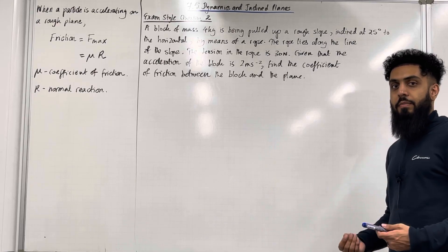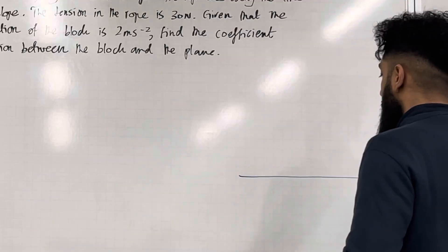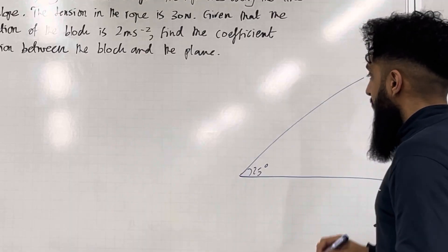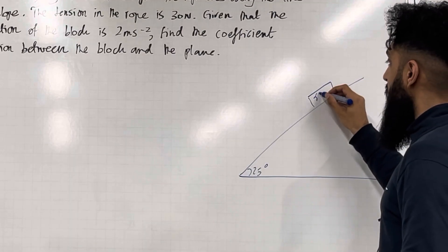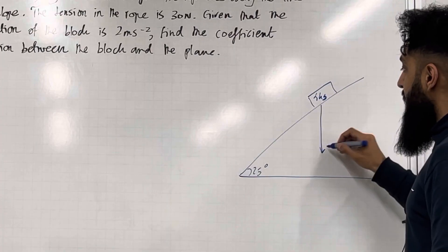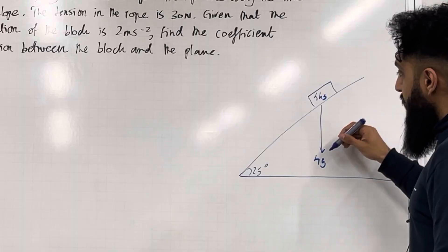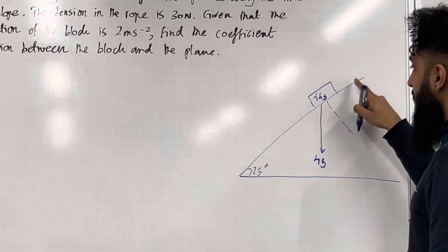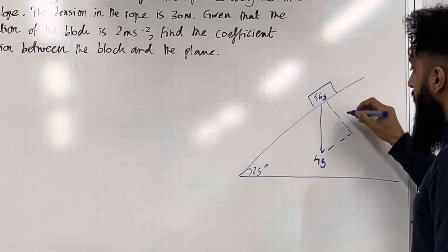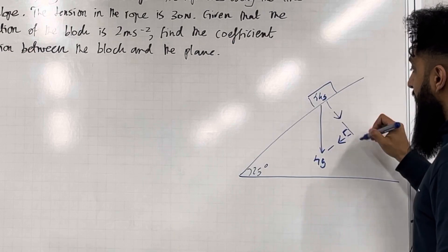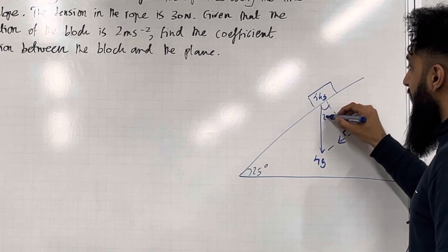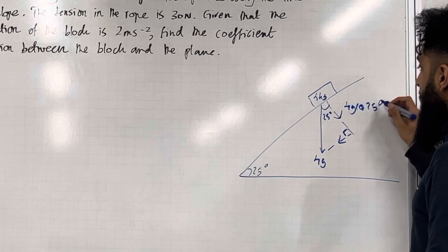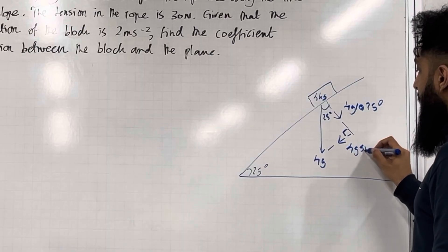I'm going to start off by drawing a diagram. We've got a rough slope inclined to the horizontal at 25 degrees, with a block of mass 4 kg on it. The weight acts vertically downwards and is given by 4g. For this weight we have component forces — one component is perpendicular to the slope and one is parallel to the slope. It can be shown that the relevant angle is 25 degrees, so the adjacent component is 4g cos 25 degrees and the opposite component is 4g sin 25 degrees.